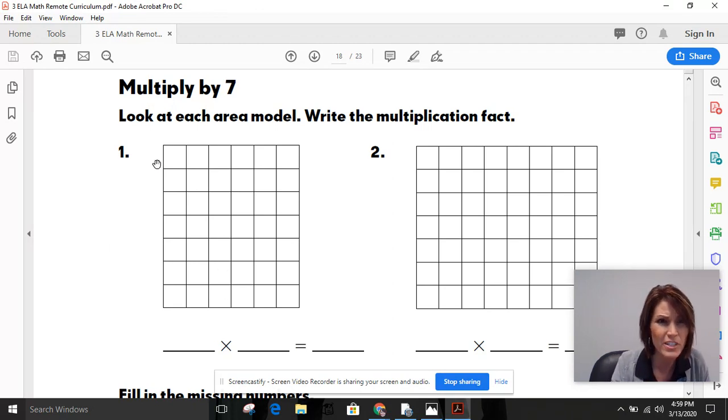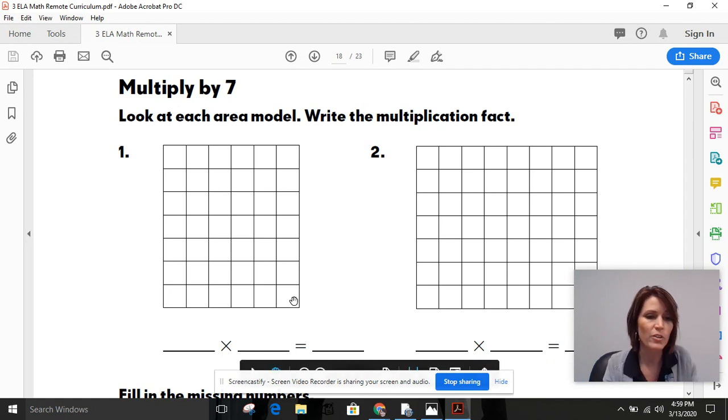So for this first example, we need to figure out length times width. So I see one, two, three, four, five, six, seven. Well, the page does say multiply by seven at the top, doesn't it? So that makes sense. Seven, one, two, three, four, five, six. So our equation is going to be seven times six.